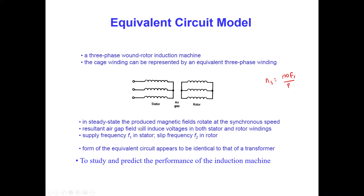Due to the air gap field, voltage is induced in both stator and rotor windings. The stator circuit operates at the supply frequency f1, while the rotor operates at frequency f2, called the slip frequency. The operation of this induction motor is similar to a transformer, except there is rotation at the secondary part. To predict its performance, we develop an equivalent circuit model.